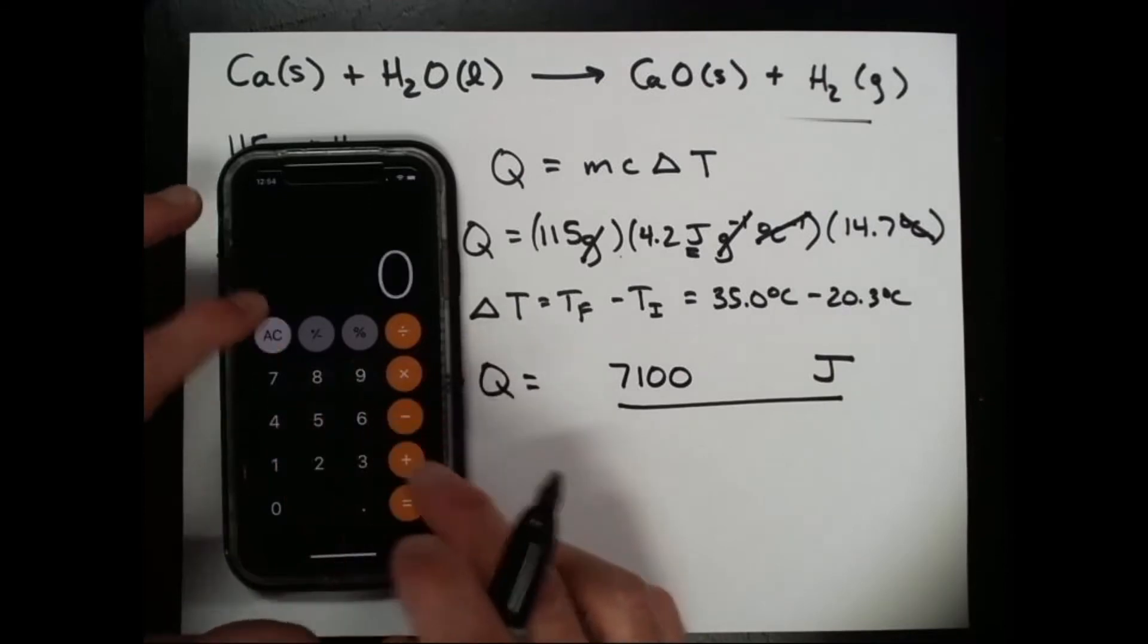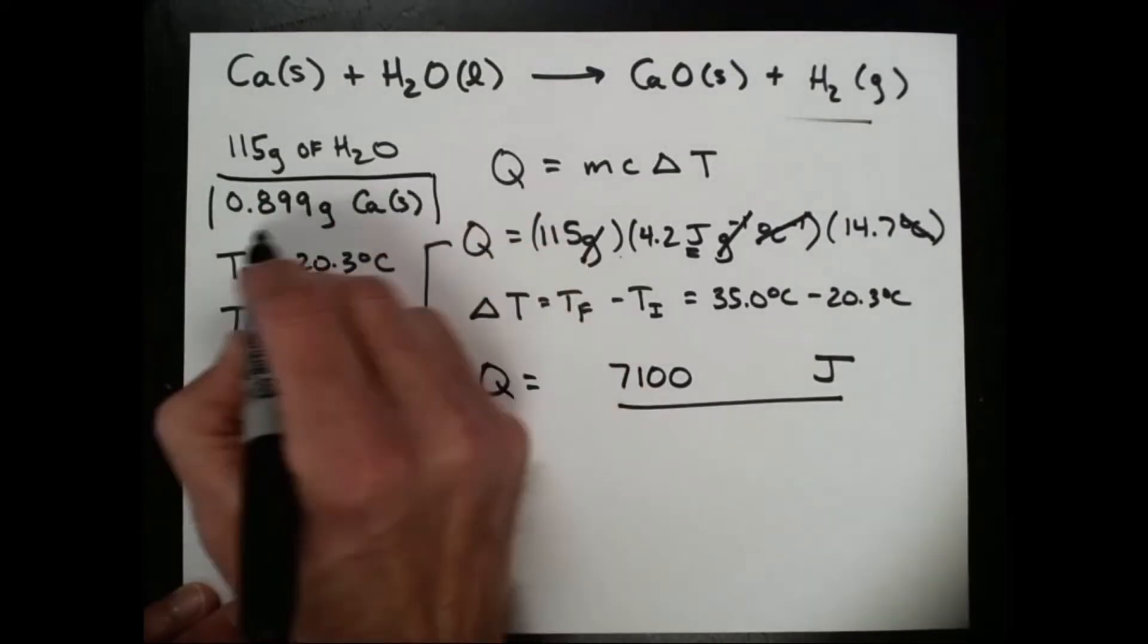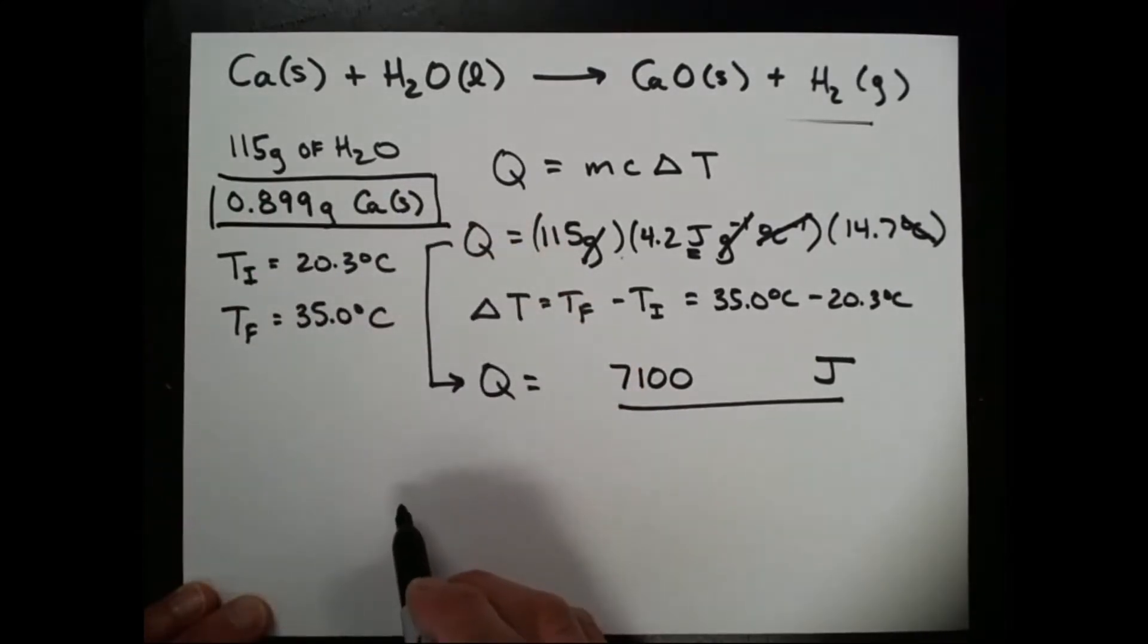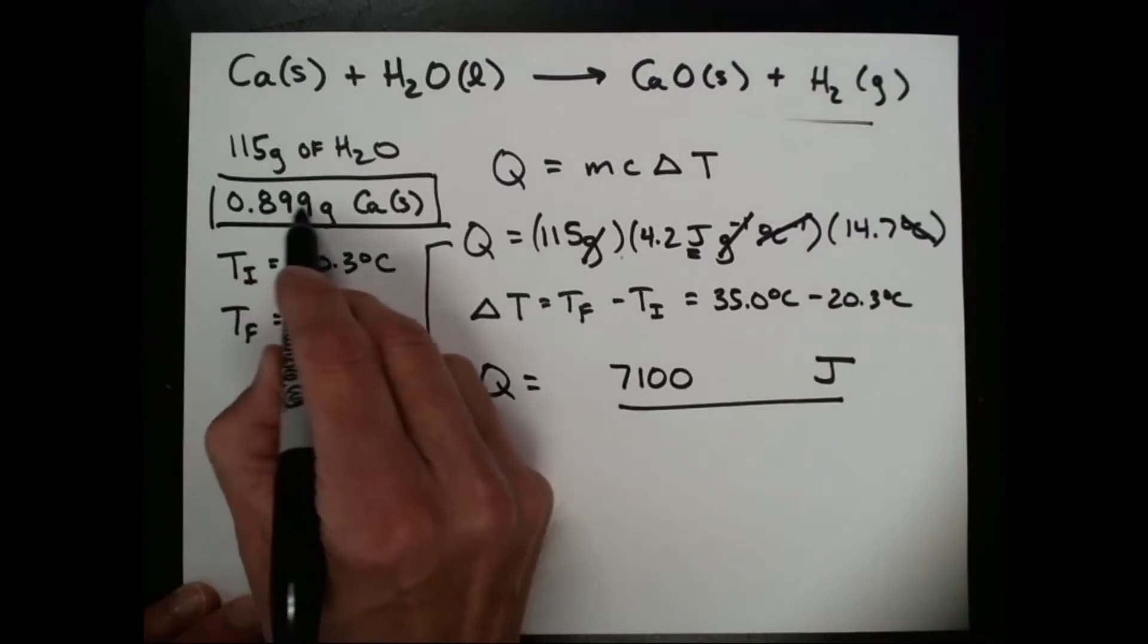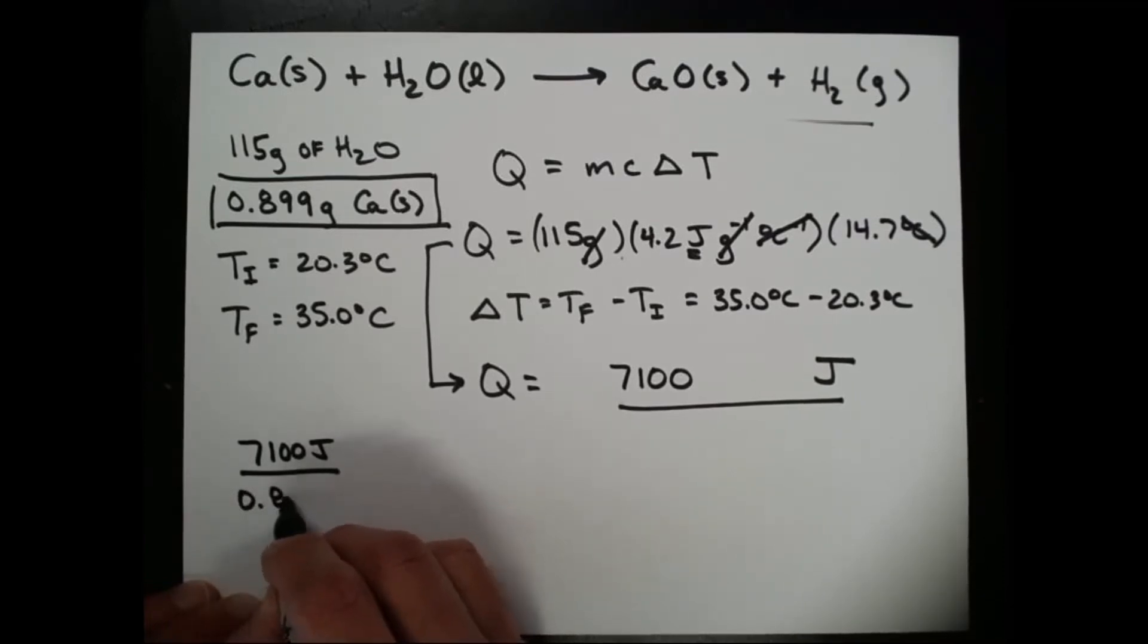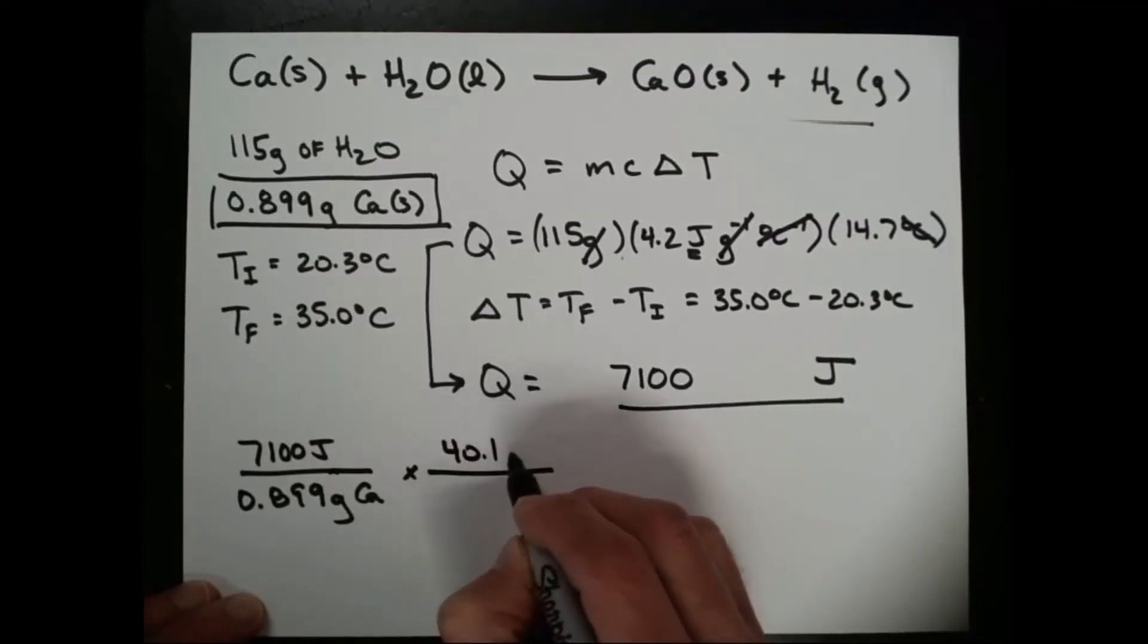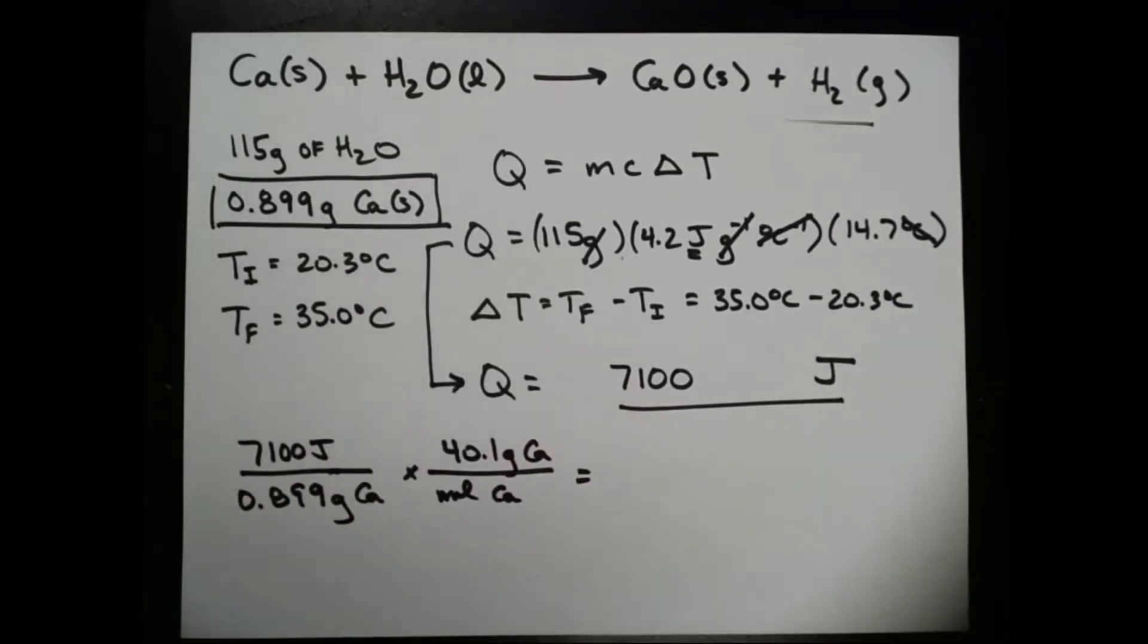Now we should recognize that that 7,100 joules that was released into the water came from the reaction of 0.899 grams of calcium. So let's figure out how many joules per mole of calcium reacted this comes out to. So I take my 7,100 joules, and I'm going to divide that by 0.899 grams of calcium. Of course, there's 40.1 grams of calcium for every mole of calcium. And we can figure it out.